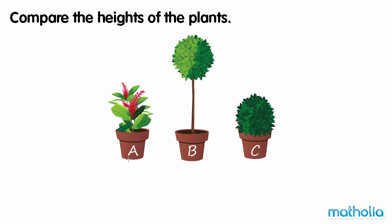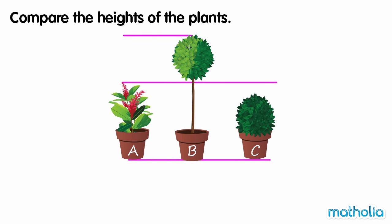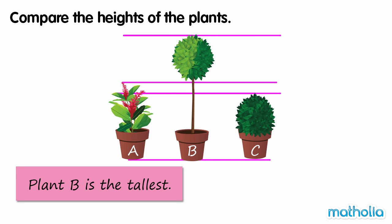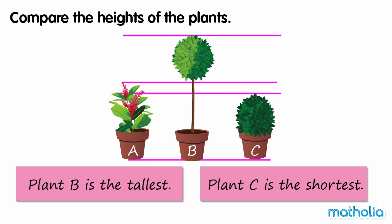Compare the heights of the plants. Plant B is taller than Plant A and taller than Plant C, so Plant B is the tallest. Plant C is shorter than Plant A and shorter than Plant B, so Plant C is the shortest.